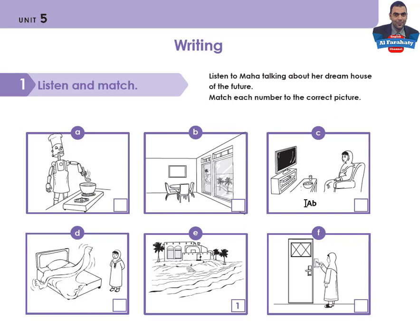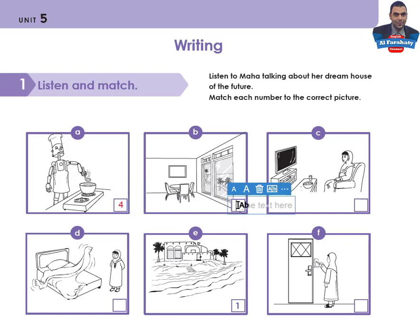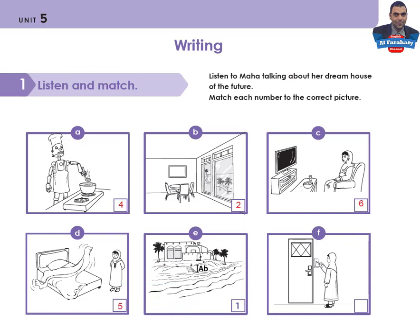Now I'll write the numbers, then we will listen again to check our answers. Picture A is number four. Picture B is number two. Picture C is number six. Picture D is number five. Picture E is done for you — it's number one. And Picture F is number three.